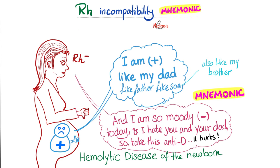Here's a mnemonic: the baby is RH positive and mommy is RH negative. The baby says to the mother, 'I am positive — RH positive. I have the D antigen. I am like my father — like father, like son.' And the mother replies: 'I am so moody. I am negative today. I hate you. I hate your daddy. So take this anti-D antibody.' And the baby says 'it hurts — hashtag hemolysis.'